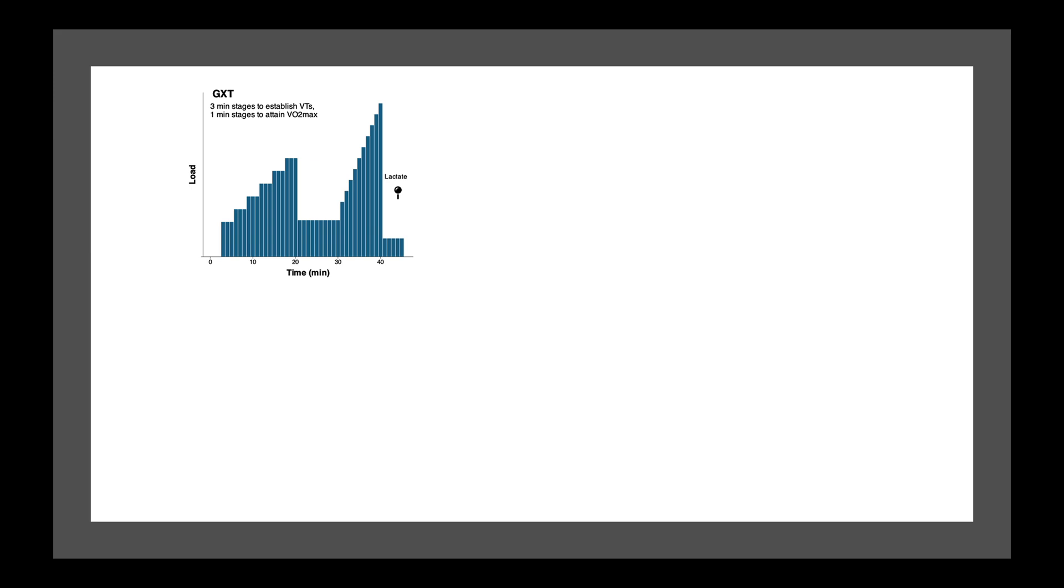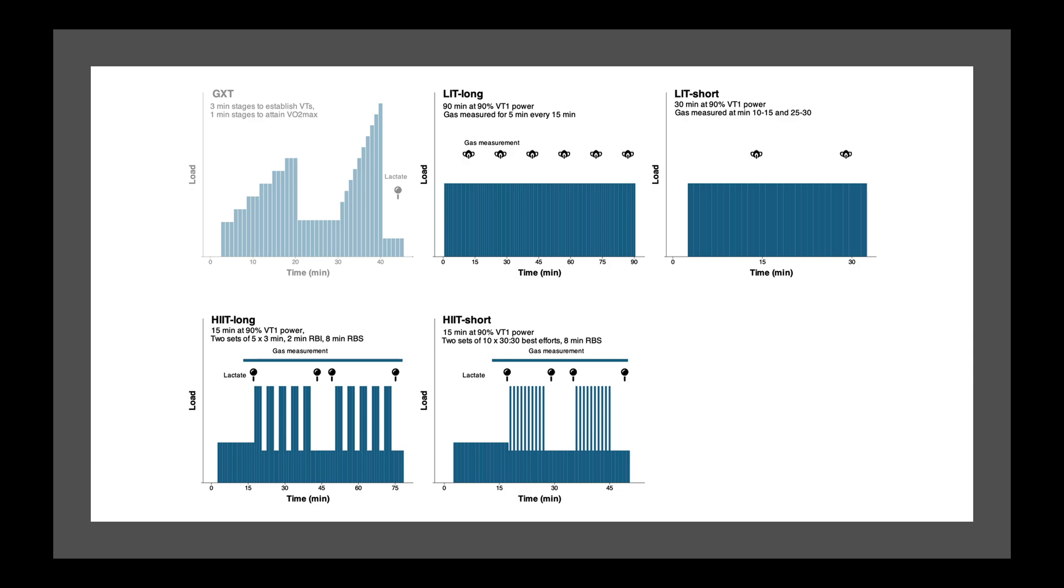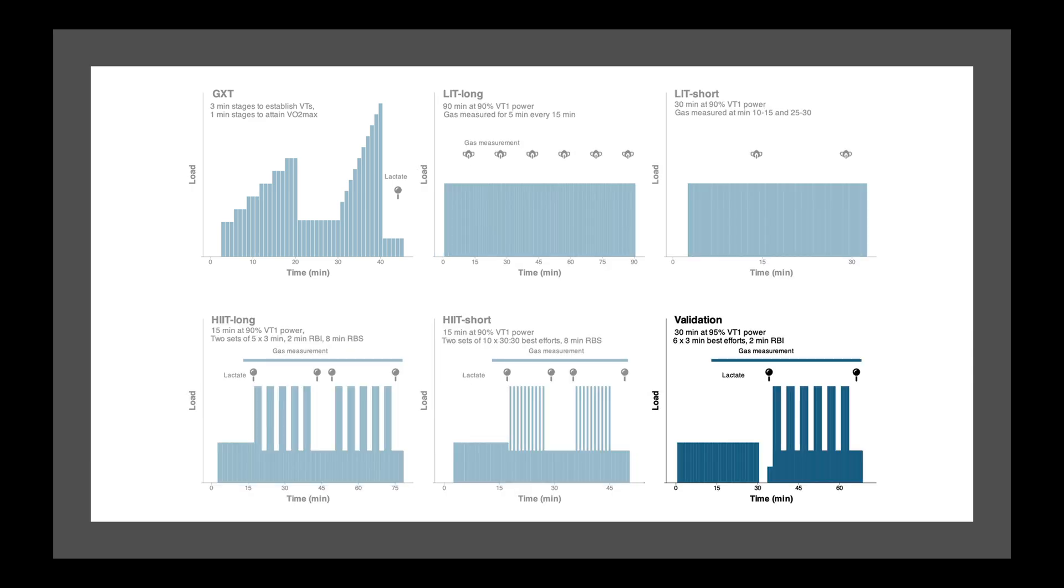The first session was a graded exercise test so we could establish exercise thresholds and VO2 max. Then we have the four training sessions. So there were two easy sessions at 90% of power at the first ventilatory threshold. One was 30 minutes and one was 90 minutes. Then there were two interval sessions, one longer one which included two sets of 5x3 minute best effort intervals, and a shorter one which included two sets of 10x30 second on, 30 second off intervals. We also used the same 15 minute warm-up across all four sessions, which allowed us to calculate the day-to-day variability in things like heart rate, efficiency, and RPE. In the bottom right we see the session used for the validation portion of the study, which was 30 minutes easy, followed by 6x3 minute best effort intervals.